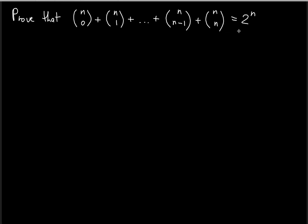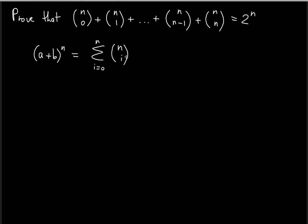Binomial coefficients should lead you to recognize that we're talking about the binomial theorem. Notice that 2 to the n can be expressed as a sum of two whole numbers. We know that a plus b raised to the nth power gives you the sum of binomial coefficients using the summation formula: from i equals 0 to n, n choose i times a raised to the n minus i times b raised to the i.